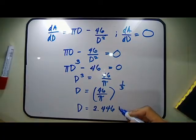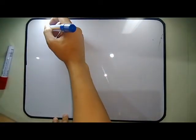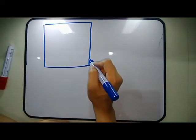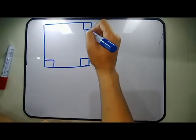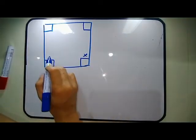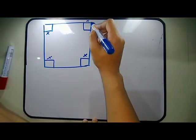In the next problem, a box is to be constructed from a piece of cardboard 20 inches square by cutting equal squares from each corner and turning up the cardboard from the sides. What is the volume of the largest box that can be constructed? First step: illustrate the figure. We have a cardboard, and the box is constructed by cutting equal squares from each corner.